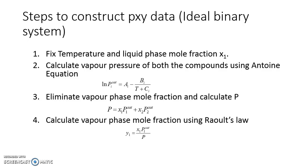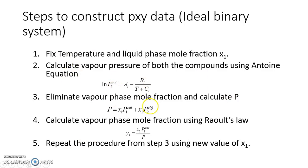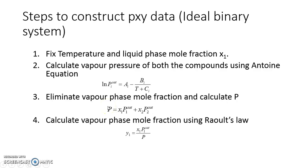This gives you one VLE data point. Our aim is to generate a Pxy diagram at a given temperature, so we change the liquid phase composition x1 — say from 0.1 to 0.2. Since temperature is the same, we skip recalculating vapor pressures, but since x1 has changed, pressure will change, and since pressure changes, y1 will change. We repeat this for x1 values of 0.5, 0.6, 0.7, and so on.